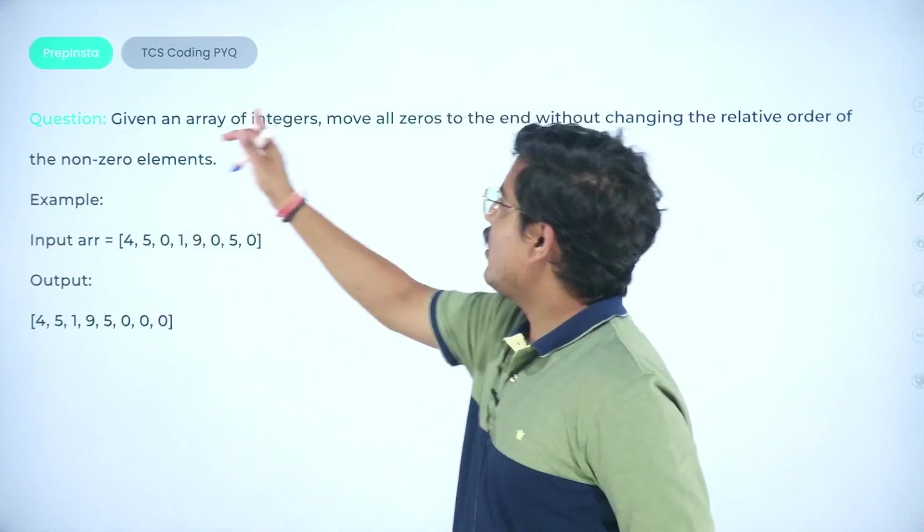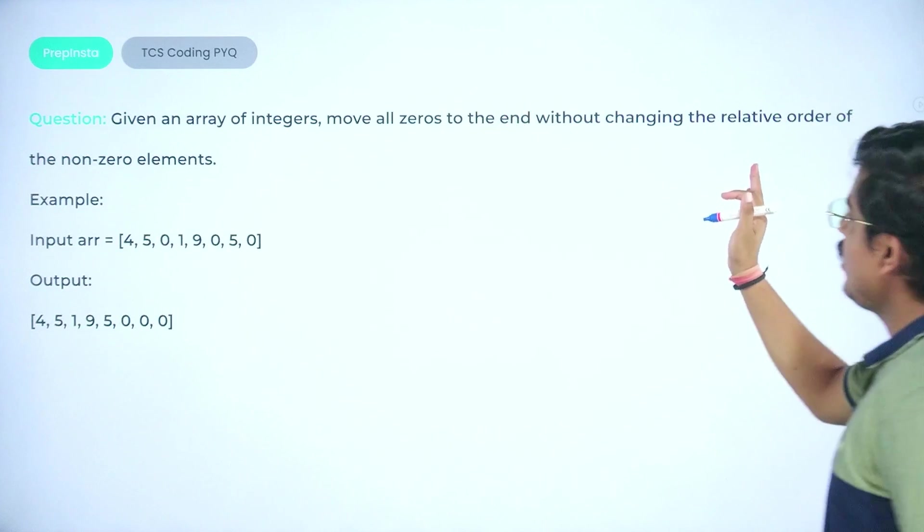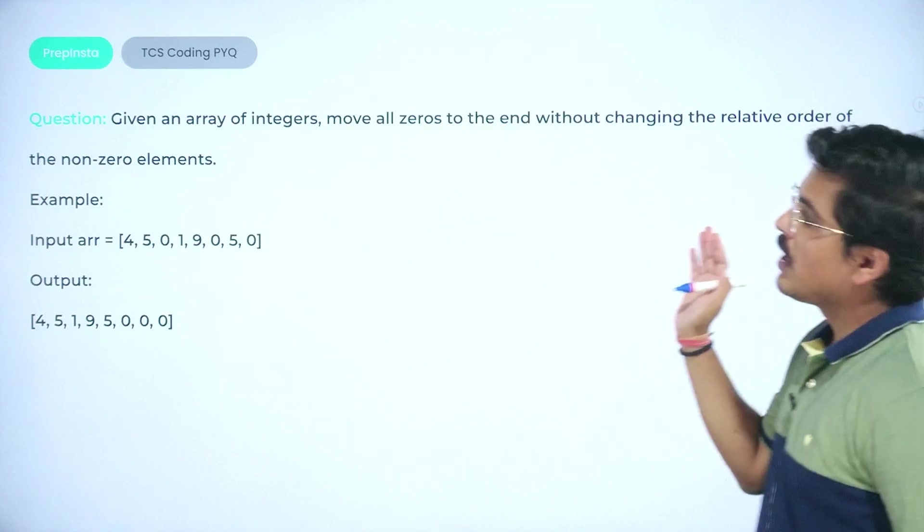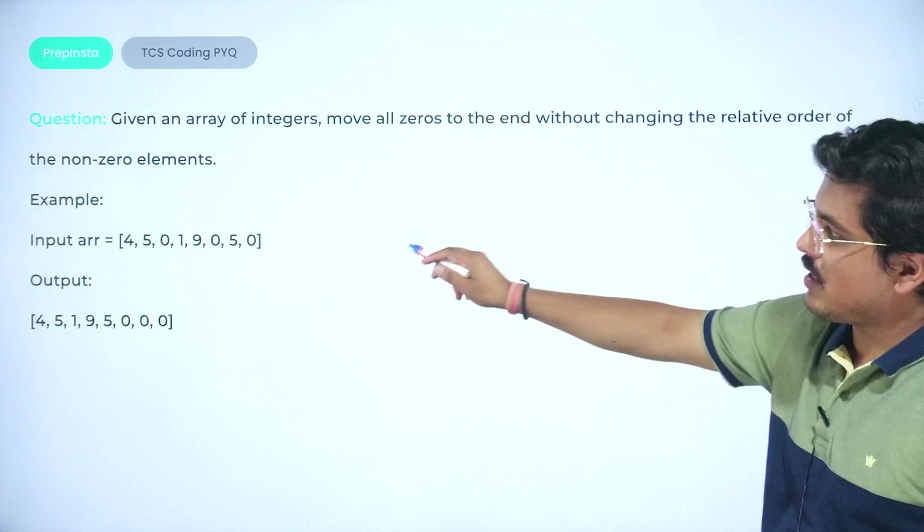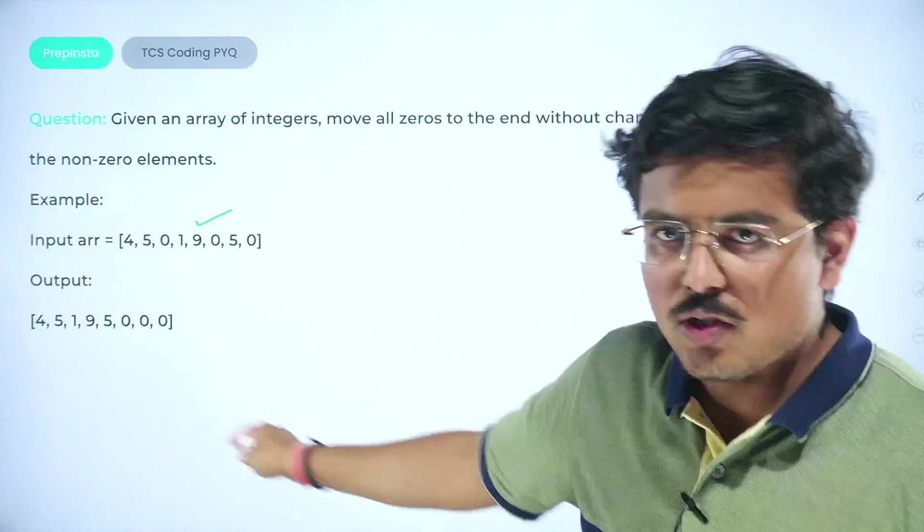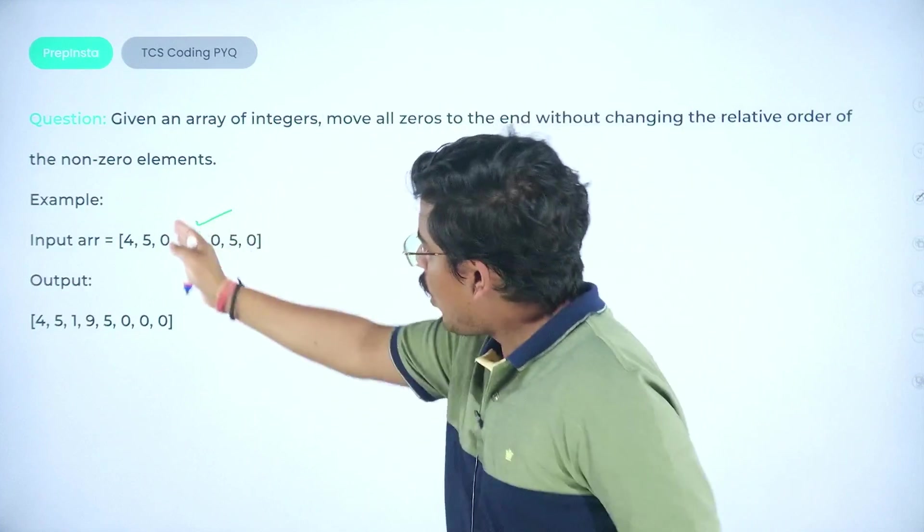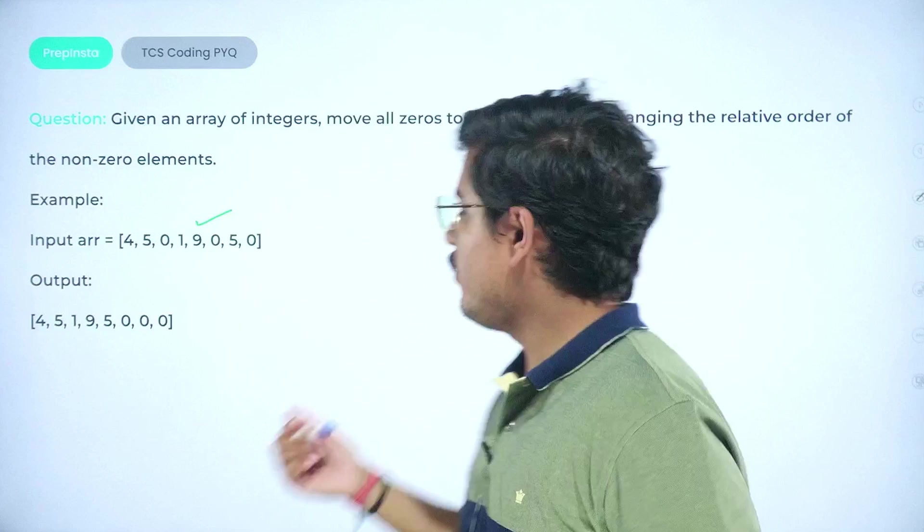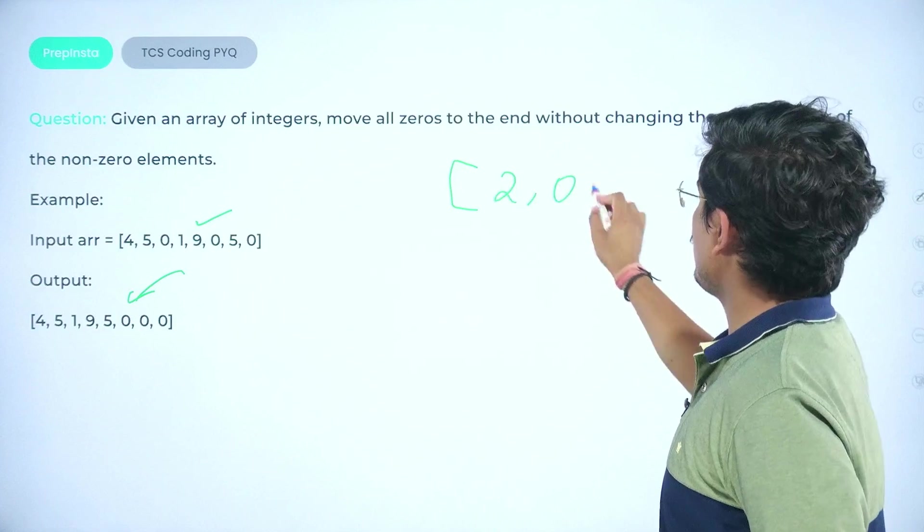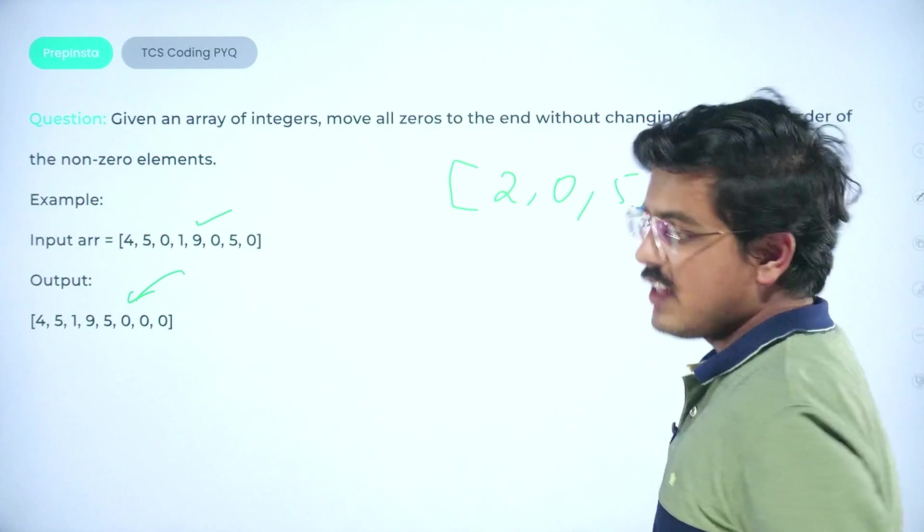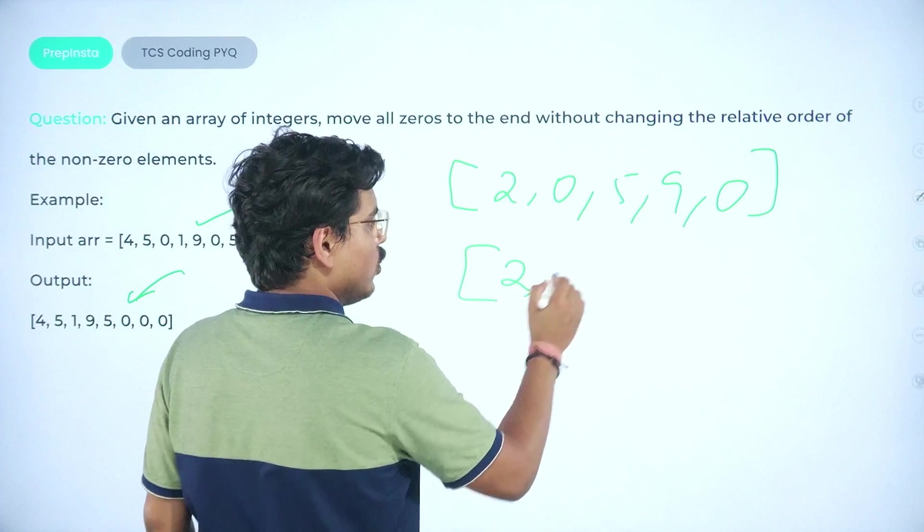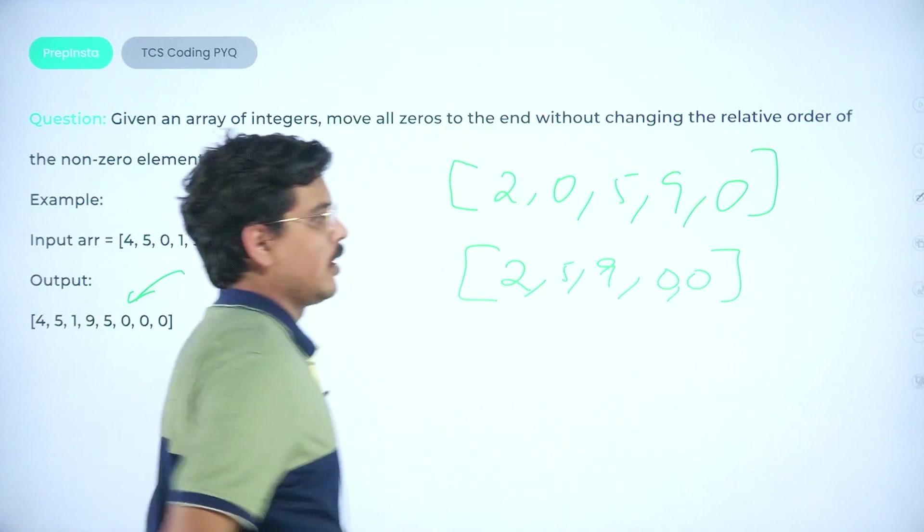The question is: given an array of integers, move all zeros to the end without changing the relative order of the non-zero elements. The whole point is that if this is a particular input, you have to keep the order of non-zero elements same and you have to push all the zeros at one end. For example, if you are having two, zero, five, nine, zero, as an output what you should get is two, five, nine and then the rest of the places should be filled by zero.